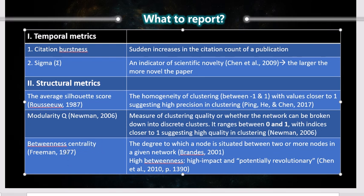Finally, betweenness centrality is quite straightforward: it is the degree to which a node is situated between two or more nodes in a given network. If one particular paper — a node or publication — sits at the center of otherwise unrelated publications because it has been co-cited by all of them, it would have a high betweenness centrality index. The higher the betweenness centrality index, the higher the impact, and the paper could potentially be considered revolutionary.